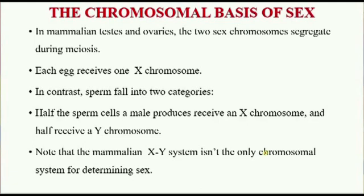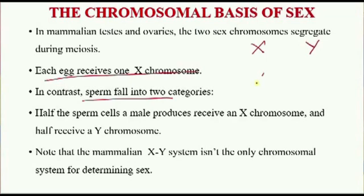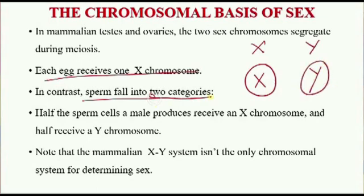Every gamete arising from a division in females will have an X chromosome in the egg. However, in the case of males, because we are talking about X and Y, when segregation occurs, a fraction of the gametes will receive X and a fraction will receive Y. That's why we say they fall into two categories.